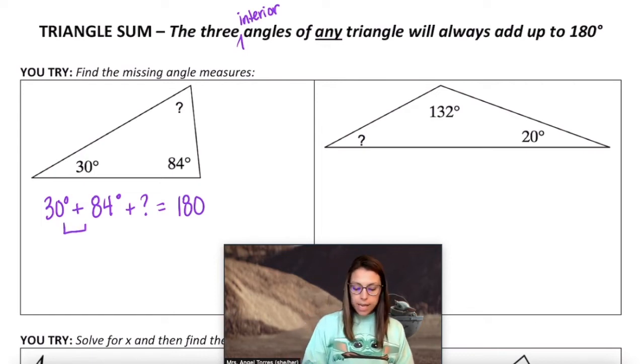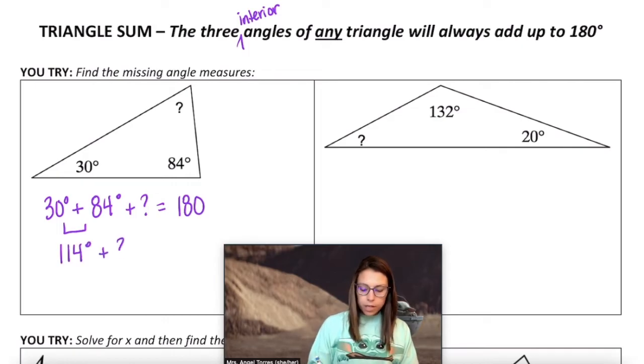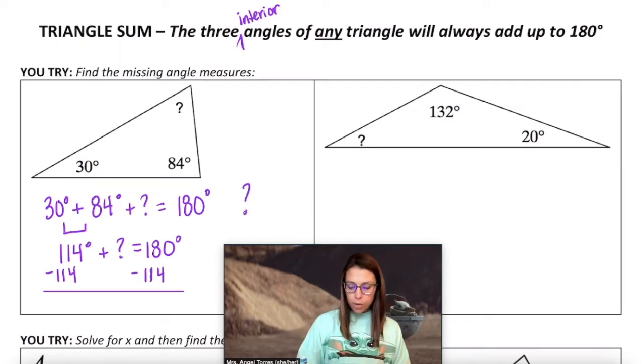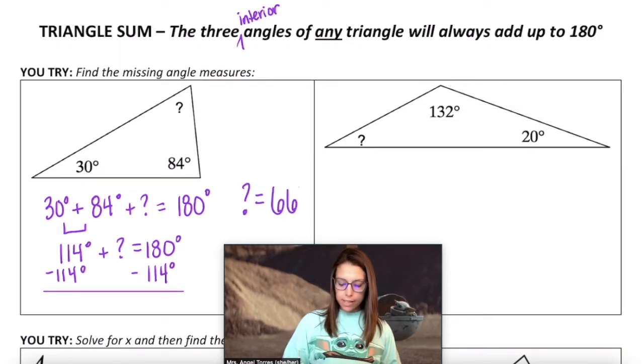30 plus 84 is 114 degrees, 30 plus 86 degrees. And subtracting that from both sides I know that my missing angle measure is 66 degrees.